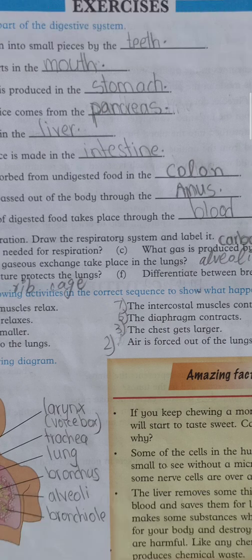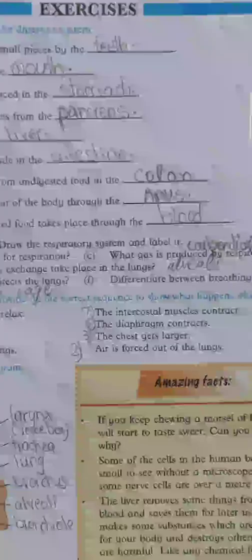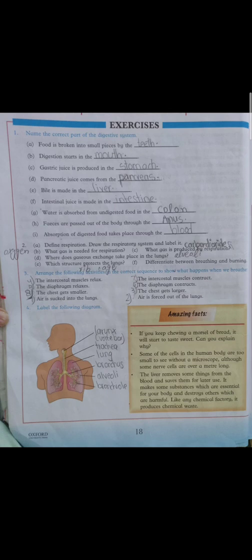juice is made in the intestines, small intestines. Water is absorbed from undigested food in the colon. Colon is the first part of large intestine. Next is: feces are passed out of the body through the anus. Anus is the last part of your digestive tract. Absorption of digested food takes place through the blood because the walls of the arteries, capillaries, and veins absorb the food...